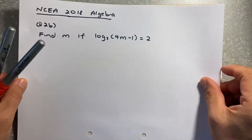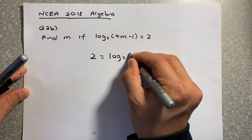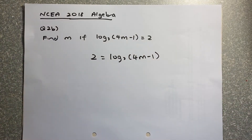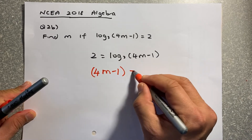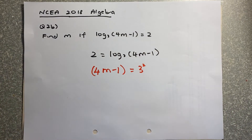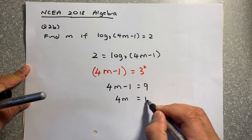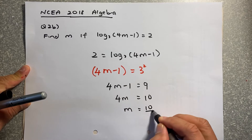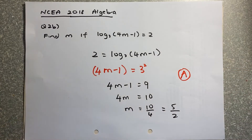Another 2018 exam question: put the single number on the left, so 2 equals log base 3 of (4m minus 1). The last number becomes your first number: 4m minus 1 equals 3 squared. Solving algebraically, 4m minus 1 equals 9, so 4m equals 10, giving m equals 10 over 4, which simplifies to 5 over 2. This is a simple achieved question and won't take more than 2 minutes.